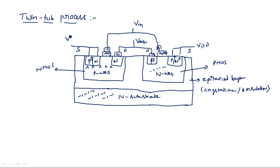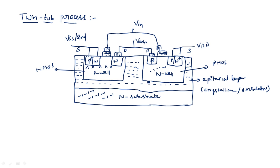The NMOS transistor is connected between VSS (ground) and V-out. The epitaxial layer is indicated in the diagram by horizontal dashed lines. Other than the epitaxial layer, everything else is already known from the previous fabrication processes. The epitaxial layer is a crystalline structure created at high temperature to make it function as an insulator.